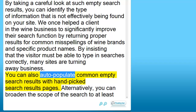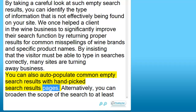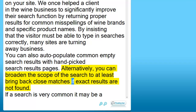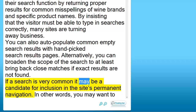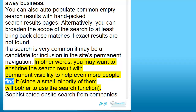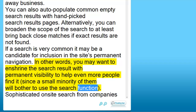You can also auto-populate common empty search results with hand-picked search results pages. Alternatively, you can broaden the scope of the search to at least bring back close matches if exact results are not found. If a search is very common it may be a candidate for inclusion in the site's permanent navigation. In other words, you may want to enshrine the search result with permanent visibility to help even more people find it, since a small minority of them will bother to use the search function.